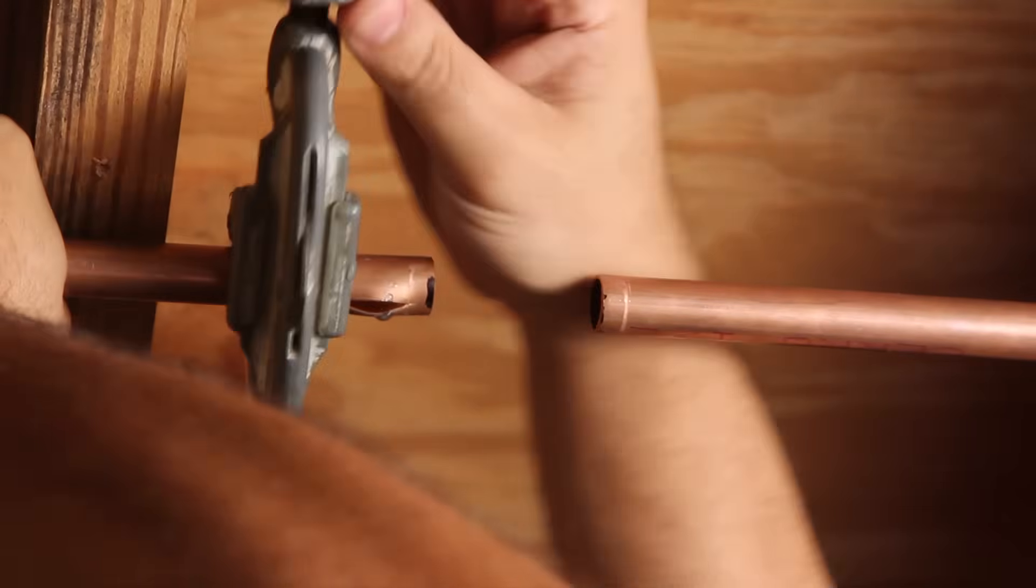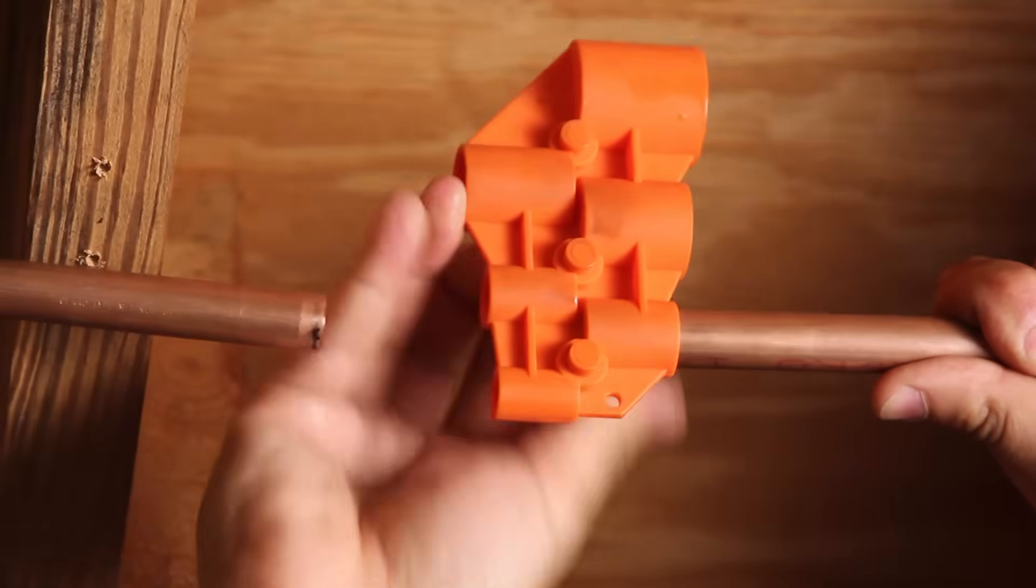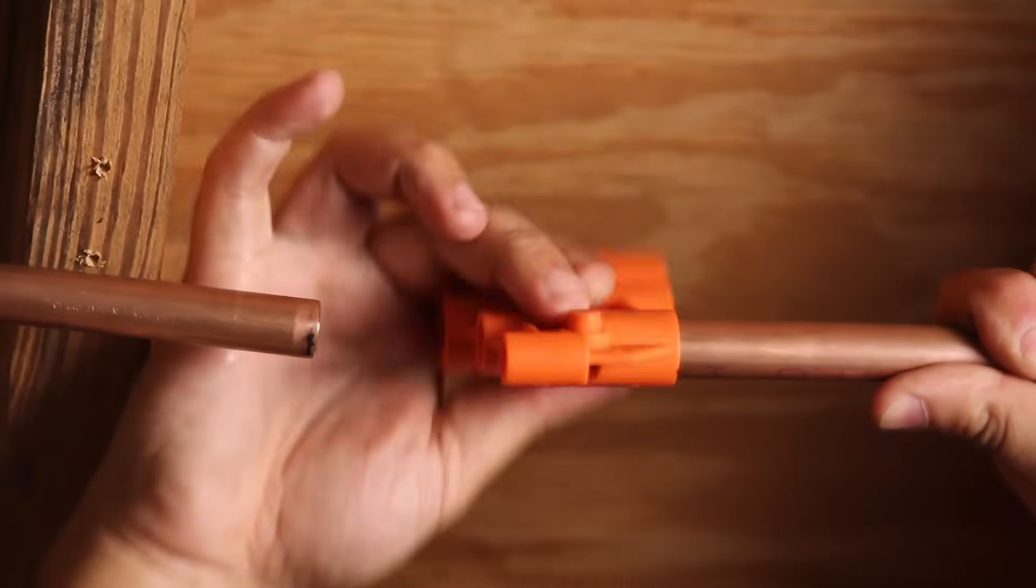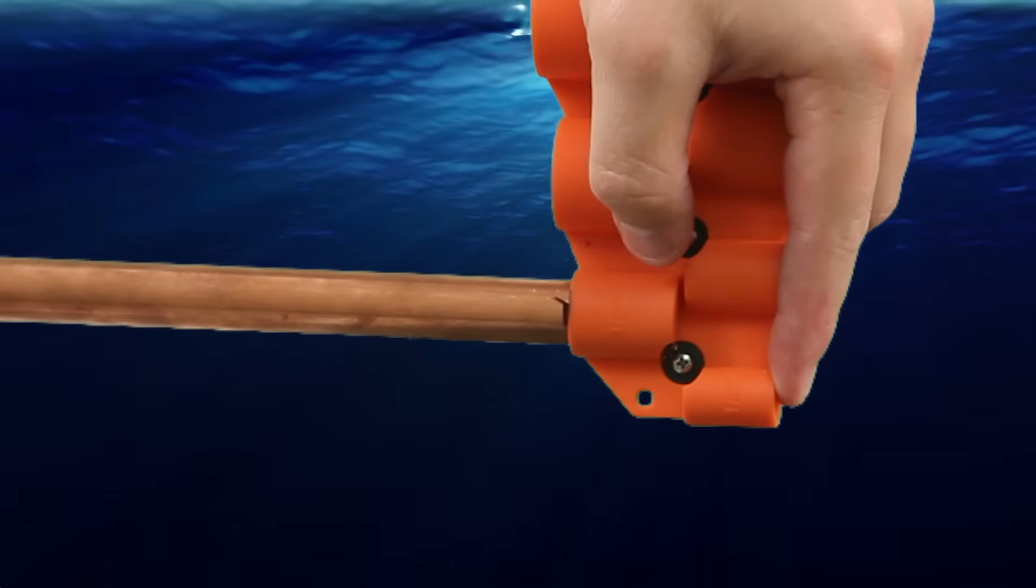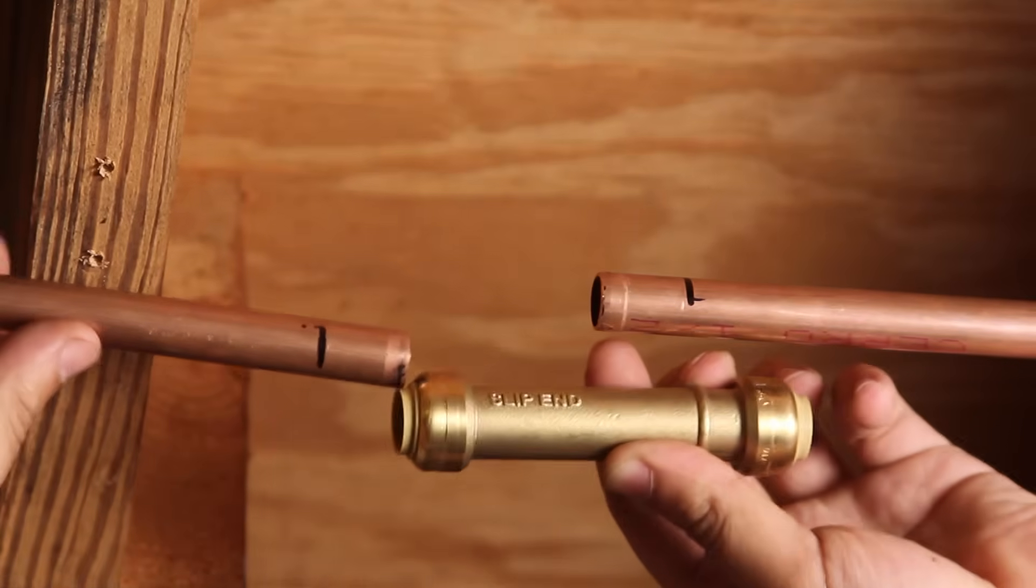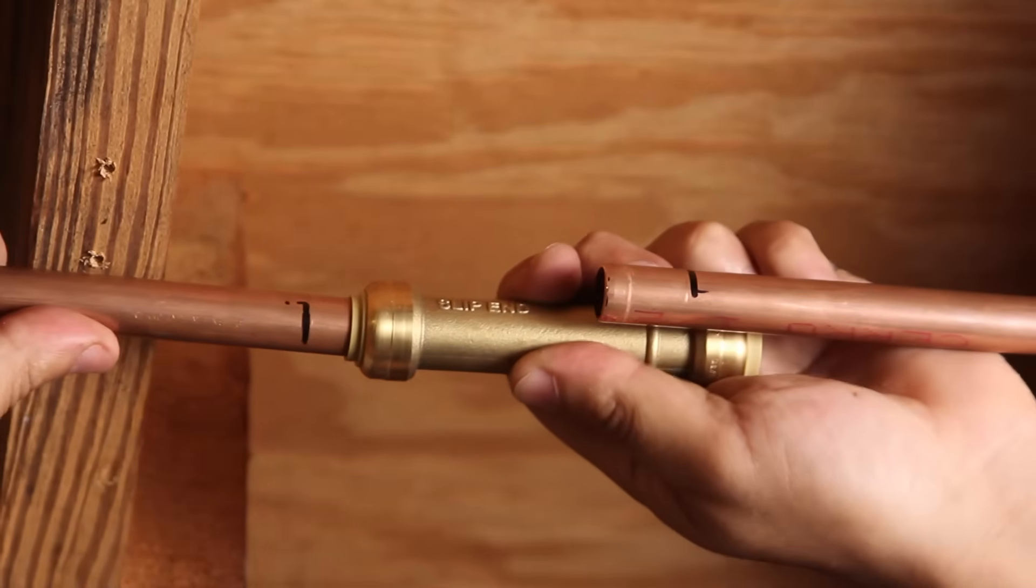After you've cut, deburred and marked your pipe, simply push the end of the coupling marked slip end over the copper as far as it will go.